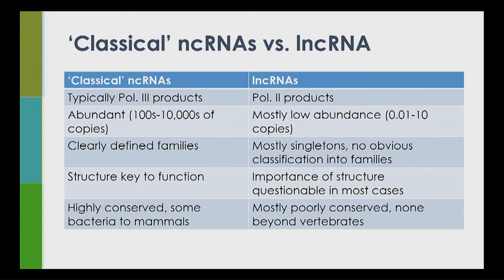As a result, lncRNAs are typically capped, spliced, and mostly polyadenylated. Because they're produced by RNA Pol II, similarly to a typical mRNA, they're expressed at relatively low levels — still about an order of magnitude lower than a typical mRNA. Many lncRNAs, when expressed in cells, are only found at one to five copies, sometimes less than one copy per cell.